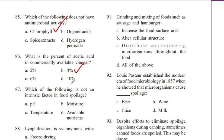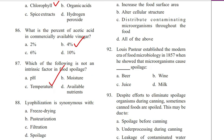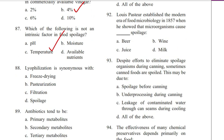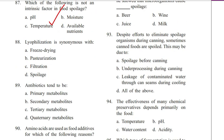Question 87. Which of the following is not an intrinsic factor in food spoilage? pH, moisture, temperature, available nutrients. Answer is C. Temperature.